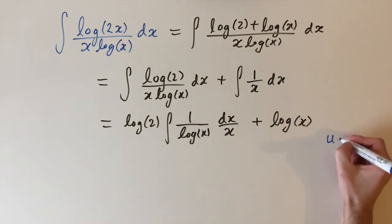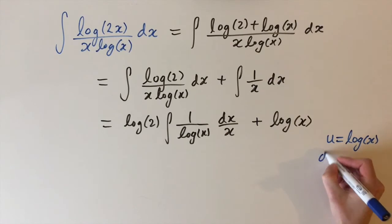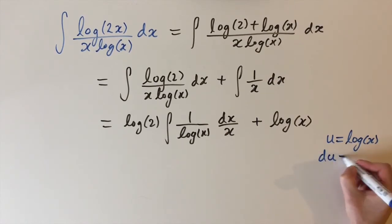So if we let u to be log of x, then we get du just differentiating. We have du equals 1 over x dx.